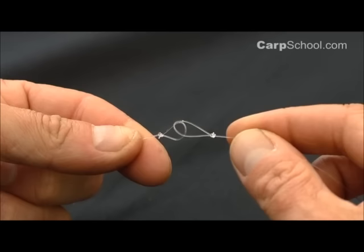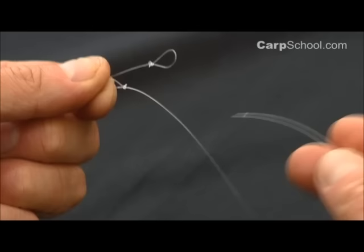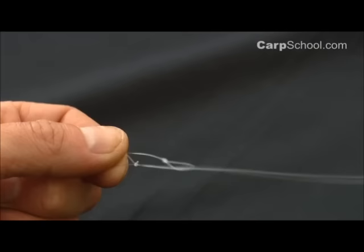If you take one of the loops, doesn't really matter which, and pass it through the other. And then take the tag end, this might have a hook on or anything else, and pass it on through.